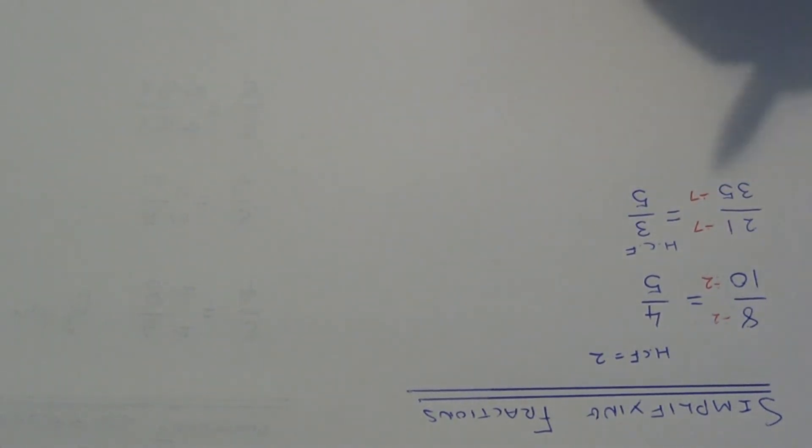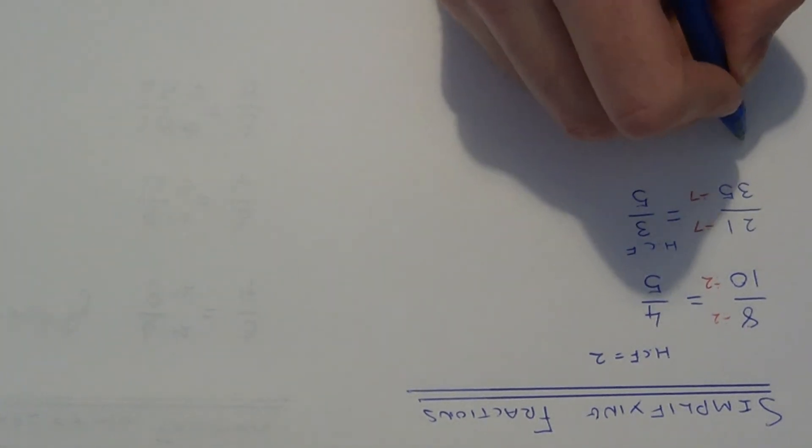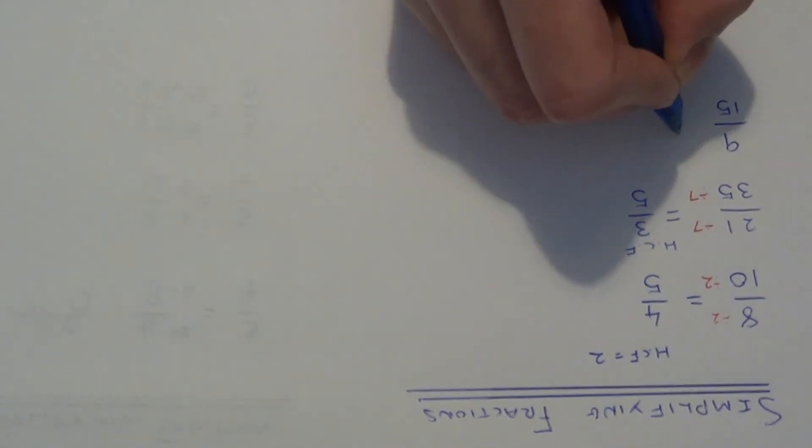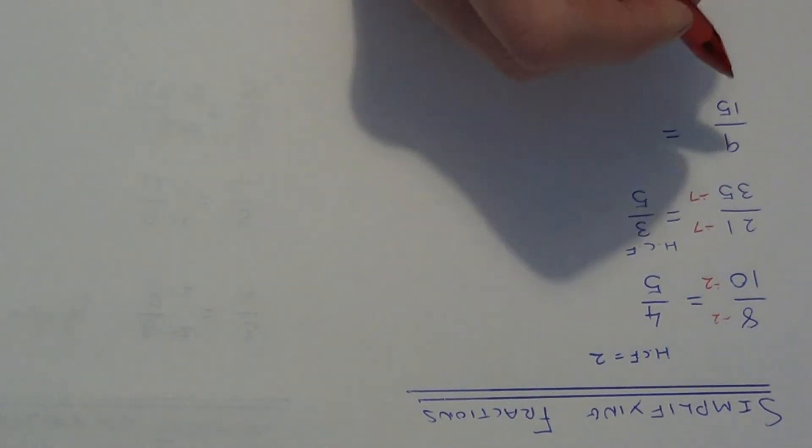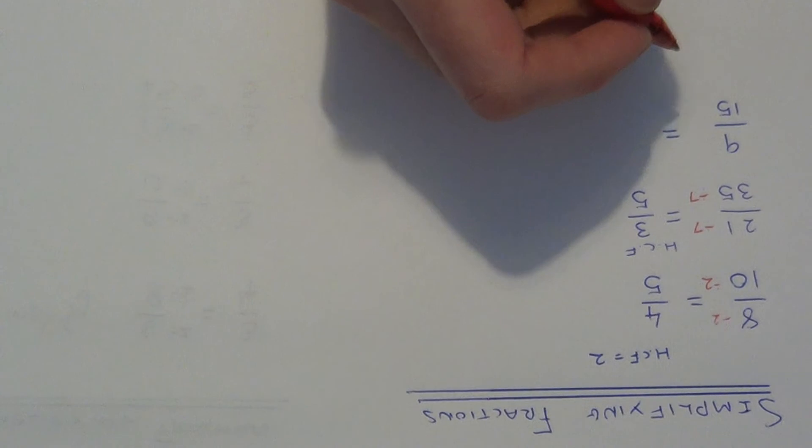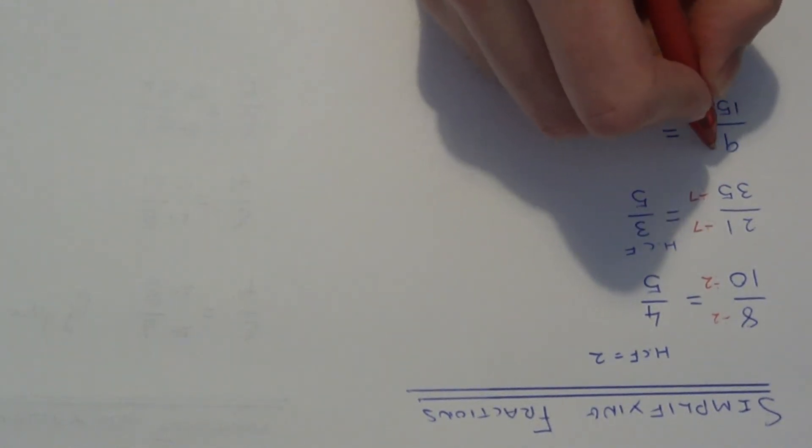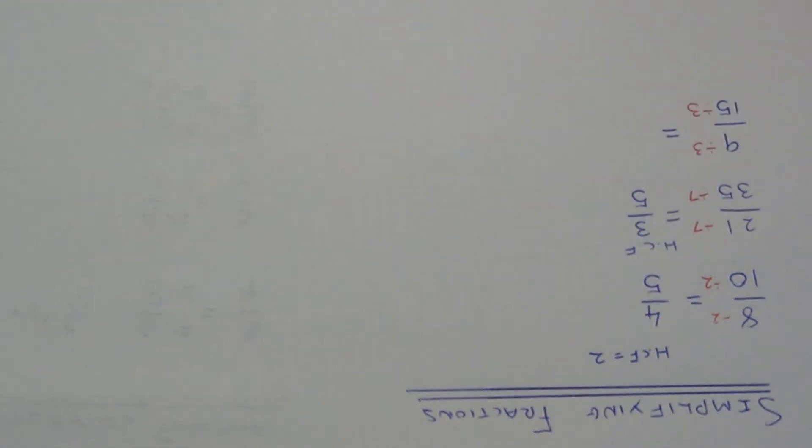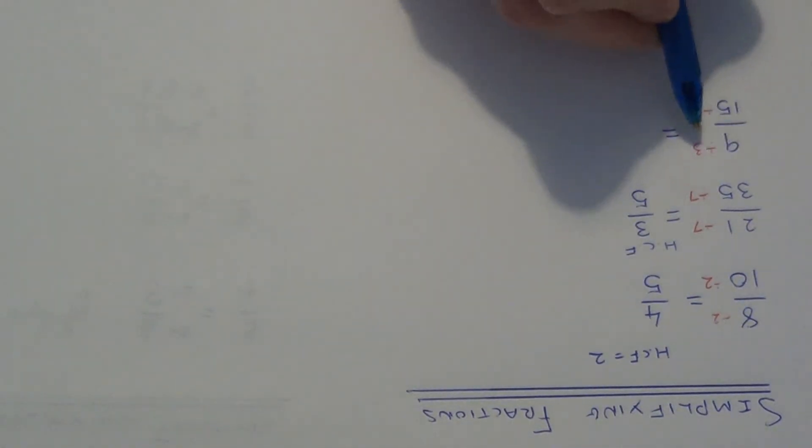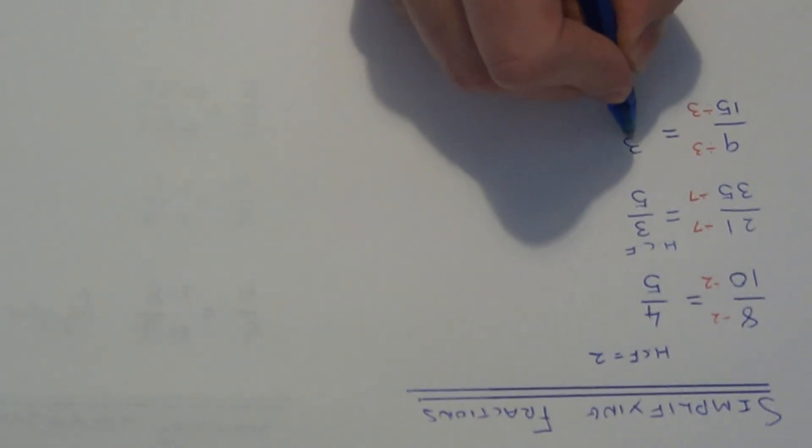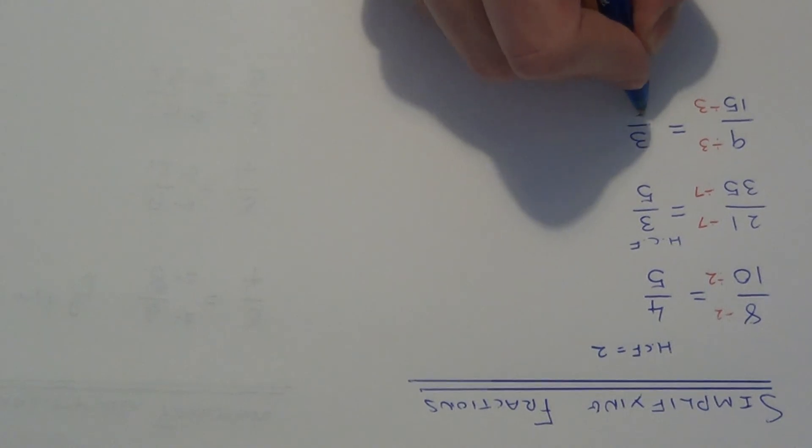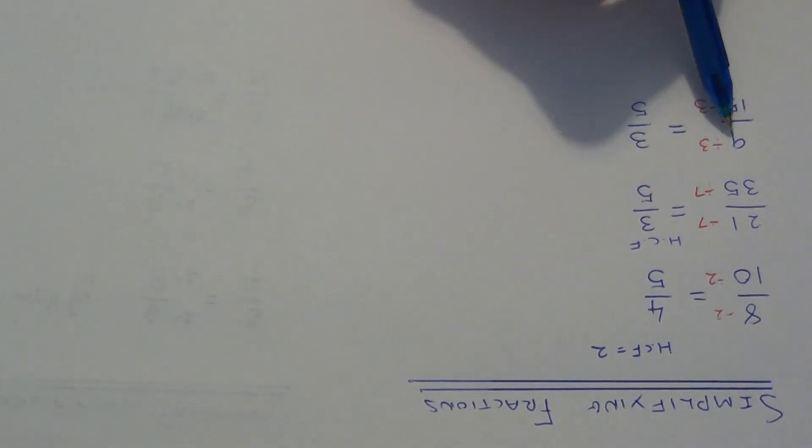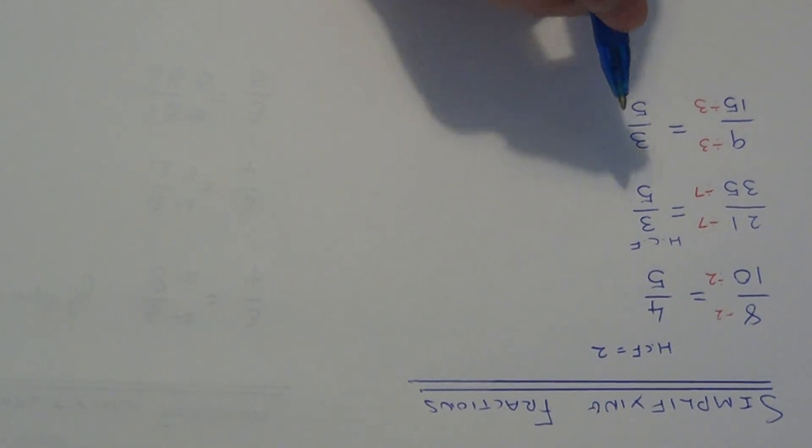Let's do one more example. So let's simplify 9 over 15. Again all we need to do is look for the highest common factor. In this case it's going to be 3. So let's divide the numerator by 3 and the denominator by 3. So 9 divided by 3 is 3. 15 divided by 3 is 5. So again we've got 9 over 15 is equivalent to 3 fifths.